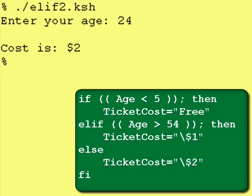Two very good uses of the else at the end of an else if construct: first, to catch for errors — if somebody enters an invalid input, you can write an error message that says this is what you entered, it's not valid, here are your valid choices, please rerun this program and enter one of the valid choices. Or, you can set up your if-then-else-if construct to test for special conditions, and if those special conditions aren't met, then perform a default action. The special conditions in this program were: if the person's under 5 they get to go free; if they're over 54 they get half price; otherwise, make them pay normal price.